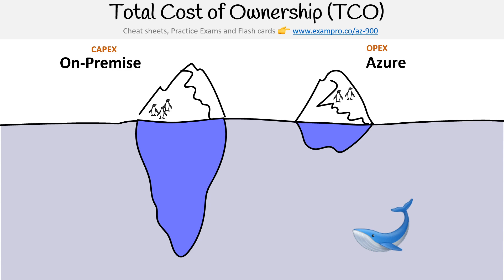The reason we're using this as a representation is because we have the top of the iceberg, which are the costs that we're generally concerned about. But then we have those hidden costs — the costs that we're not really thinking about — that are underneath the water. And if you know icebergs, they can be really big underneath; you don't know.